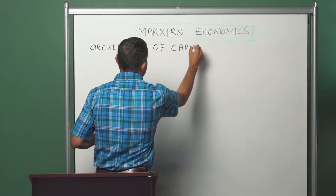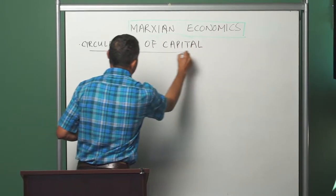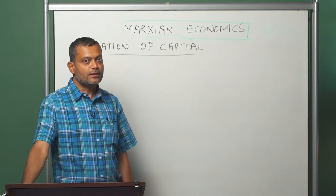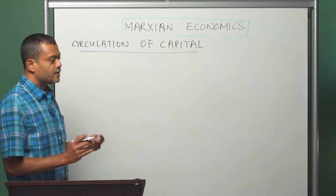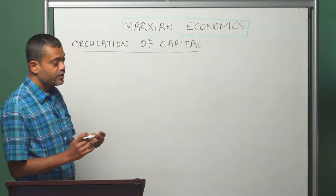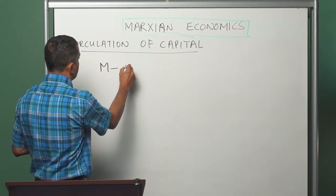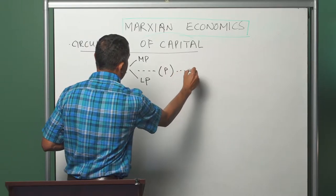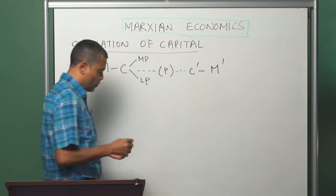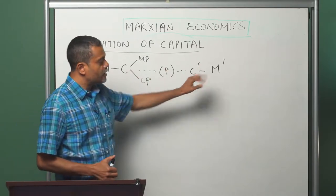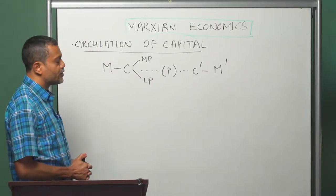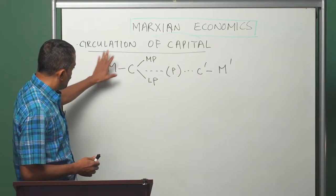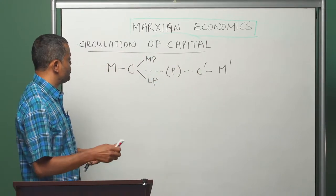We are going to study the argument laid out by Marx in parts 1 and 2 of volume 2 of Capital, which looks at the process of circulation of capital in general. The starting point of our analysis will be the circuit of capital. Let me write the circuit of capital once more for you and I will explain the parts of the circuit in a minute. This circuit has three stages or three parts.